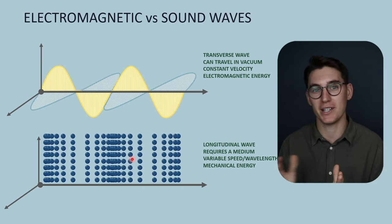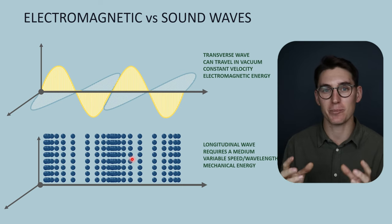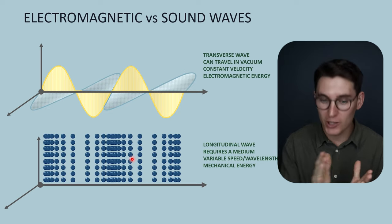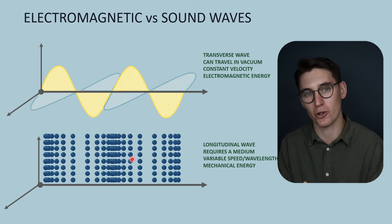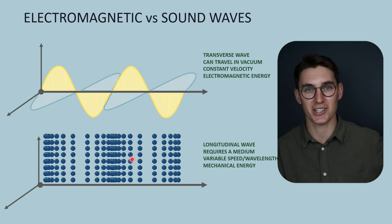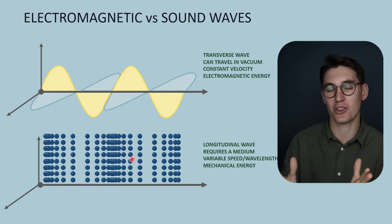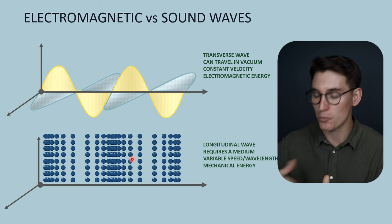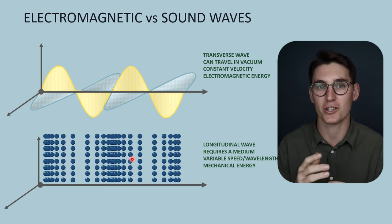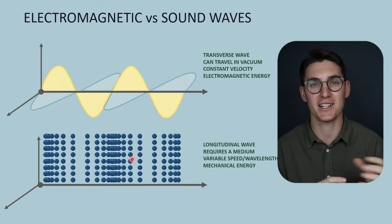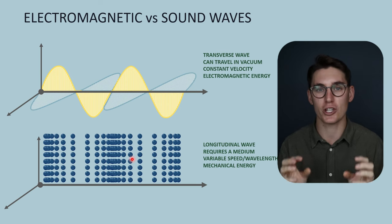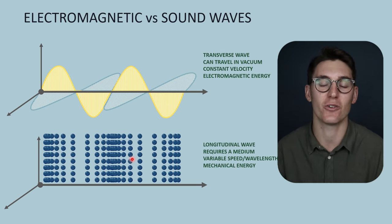To summarize: sound waves require a continuous, elastic medium to travel, and depending on properties of that medium the speed of the sound wave will change while the wavelength changes accordingly — but the frequency will not change. If we set a frequency on an ultrasound probe, the speed changes through various tissues but frequency remains constant. In electromagnetic radiation it was speed that was constant; here it is frequency. Finally, the energy transferred is mechanical energy, requiring a mechanical force to propagate. In our next talk we'll take a closer look at wavelength, frequency, period, and the speed of waves as they travel through a medium.